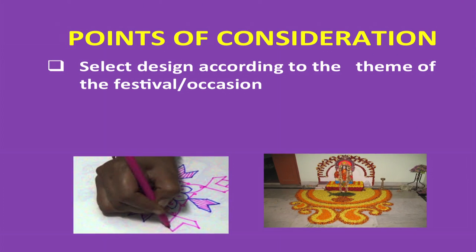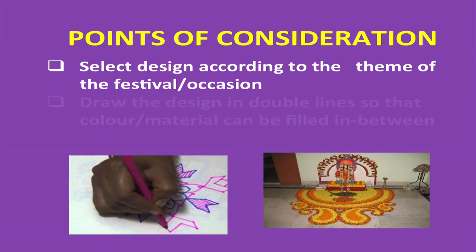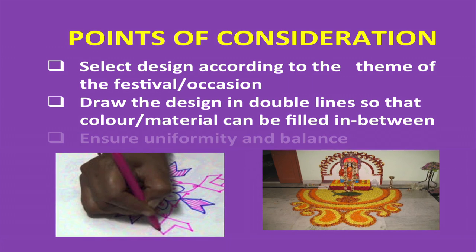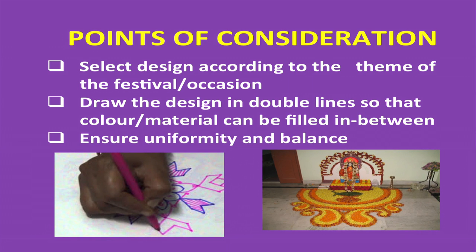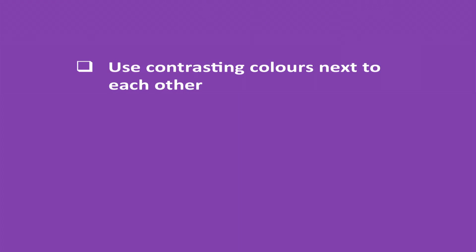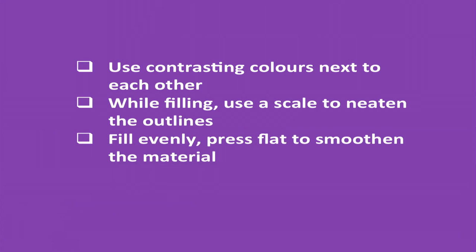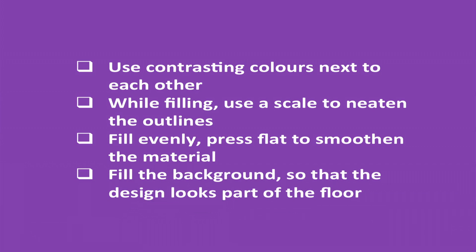What are the main points to consider while designing floor decoration? Select a design according to the theme of the festival or occasion. Draw the design in double lines so that color and material can be filled in between. Ensure uniformity and balance throughout the design. Use contrasting colors next to each other. While filling, use a scale to neaten the outlines. Fill evenly, press flat to smoothen the material, and fill the background so that the design looks part of the floor.